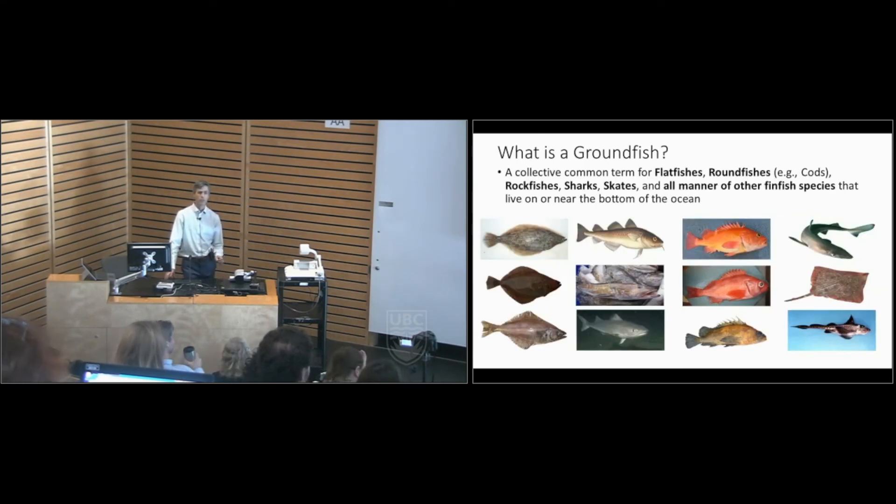Groundfish, in the way that it's defined for our context, includes a very broad range of species. It's almost everything that lives on the bottom of the sea and swims. So that can be flatfishes, roundfishes, rockfishes, sharks, skates, etc. So you see how diverse it can be.